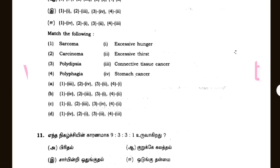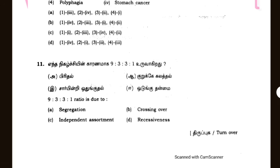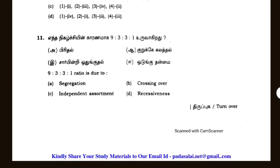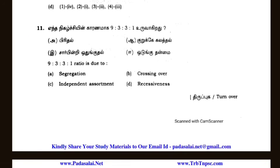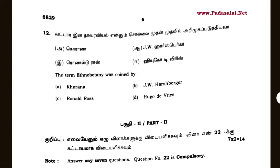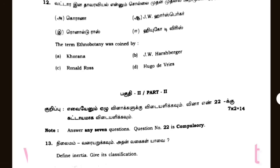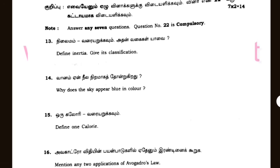Check the 1 mark questions — 10, 11, 12. The ratio is 22. The 15 mark and 16 mark questions. The term Botany was coined by — that's a 2-mark question.